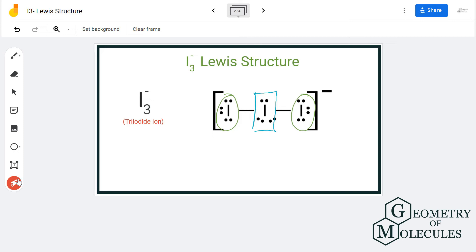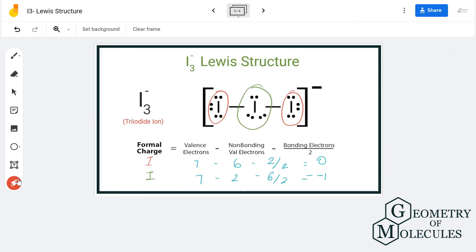To confirm this is the right Lewis structure, we're going to check the formal charges of the iodine atoms. The iodine atoms on the outside will have different charges than the one in the center. Using the formula for formal charge, we'll find out the charges.